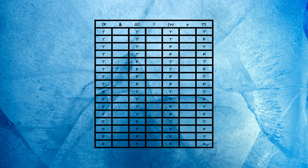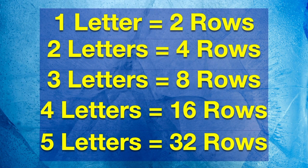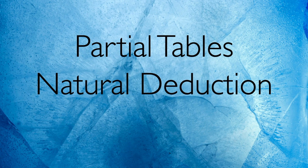And I hate to break it to you, but five different letters will require 32 rows. So full truth tables get to be a pain pretty quickly. That's exactly why other techniques are important, like partial tables or natural deduction. I won't go into those right now, because we've got one last loose end to tie up.